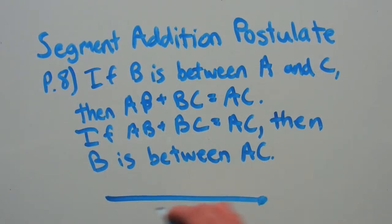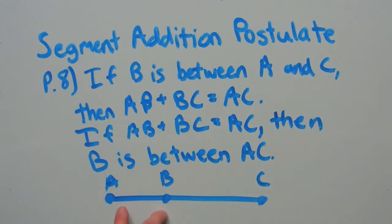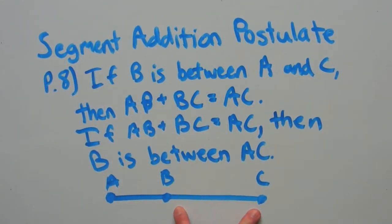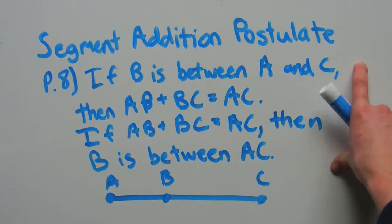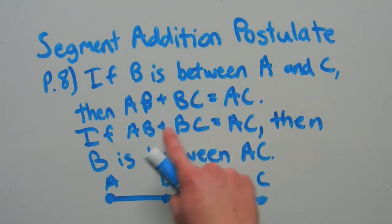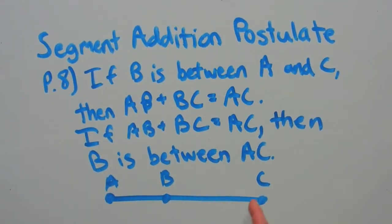If we were to have a line, you can see that if B falls between A and C, then the measure of the AB segment plus the measure of the BC segment equals the measure of the entire segment AC. That is what this postulate is saying: if B is between A and C, then AB plus BC equals AC, or if AB plus BC already equals AC, then B has to be between A and C.